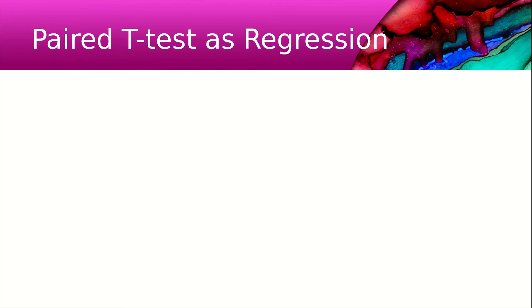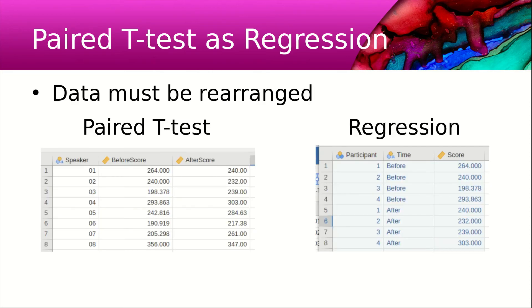Now let's look at a paired t-test as regression. In this case, the data must be arranged a little bit. In a paired t-test, each score appears in its own column. But in a regression, there's only one column for score, and another variable must be added that indicates whether the test was before or after.